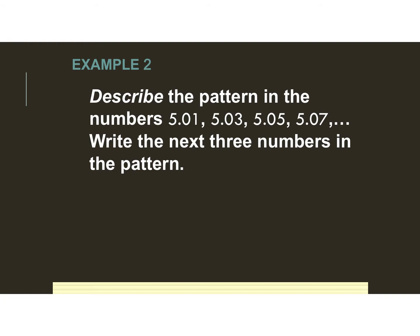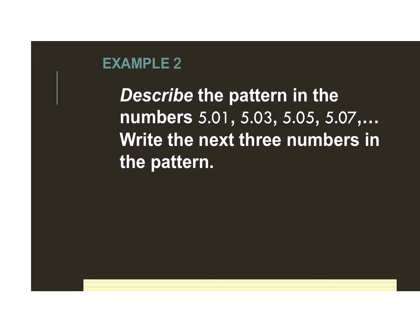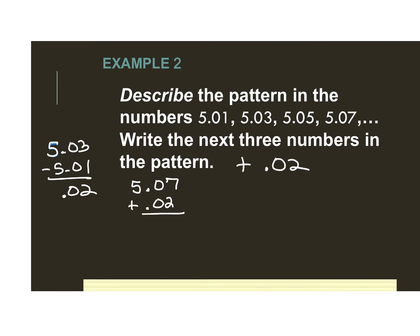This one's getting bigger, so I'm going to figure out the pattern. I can test it by taking two side-by-side numbers and subtracting them. Taking 5.03 minus 5.01, I can see they added 0.02 — or 2 hundredths — each time. So to get the next numbers in the pattern, I take 5.07, add 0.02 to get 5.09, then 5.11, then 5.13. Again, to complete a pattern we're using inductive reasoning.